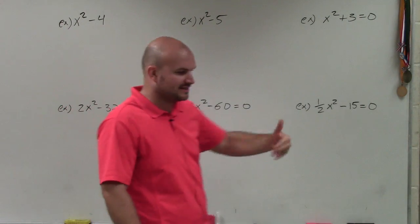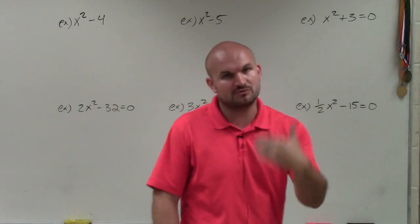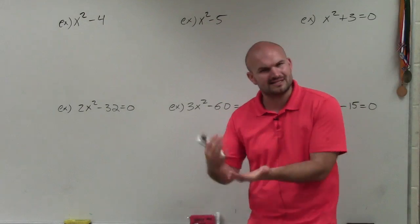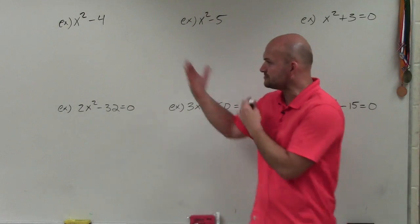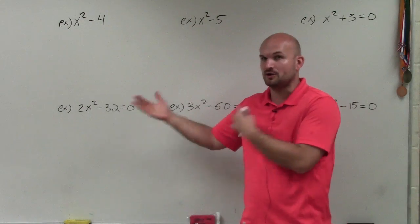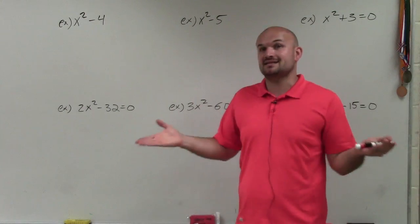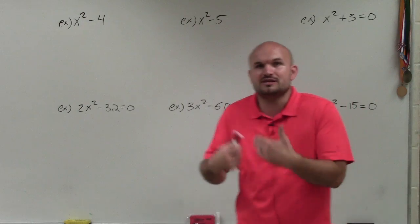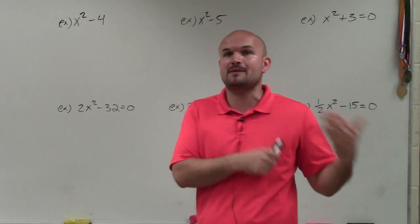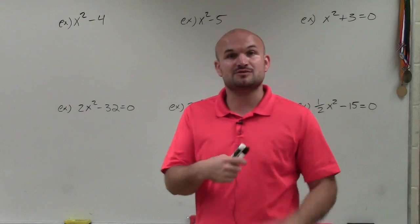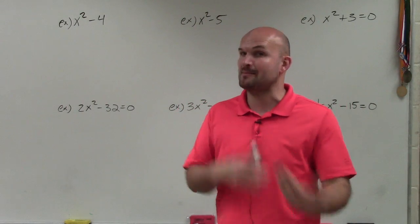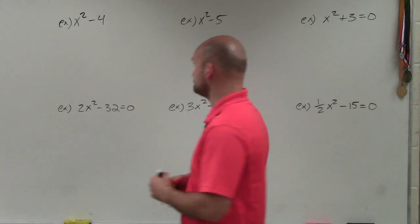Using the square root method, as I mentioned, we're going to want to use inverse operations. Since we only have one variable, we can isolate that variable. We want to isolate using the reverse order of operations, as well as our inverse operations and the properties of equality.